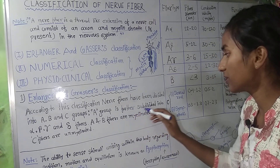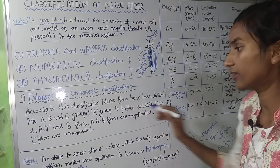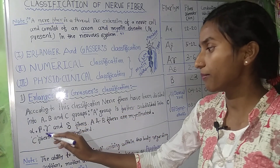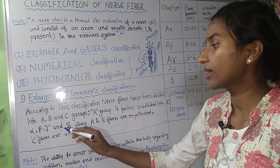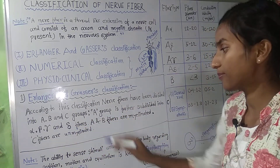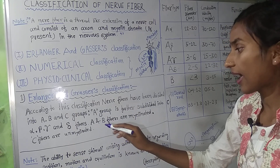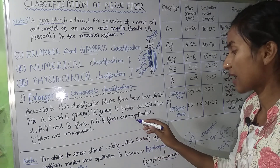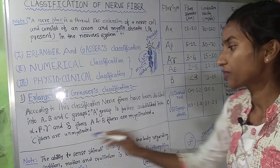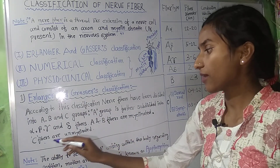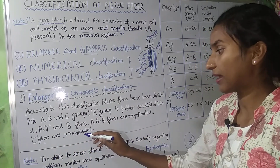The A group is further subdivided into alpha, beta, gamma, and delta fibers. A and B fibers are myelinated, while C fibers are unmyelinated.